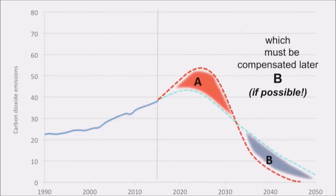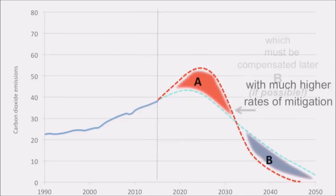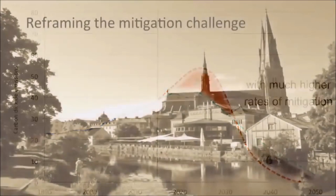That means future generations — because it's not us, it's future generations — will then have to suck more CO2 out of the system one way or another. Their mitigation rates have to be much higher, and I'll come back later to say that simply won't be possible. Our choice to fail today is locking in the future. We cannot say just do easy incremental things today and then we'll solve the problem later. That doesn't work on climate change, because the science doesn't allow it.